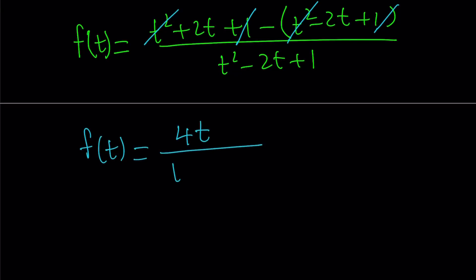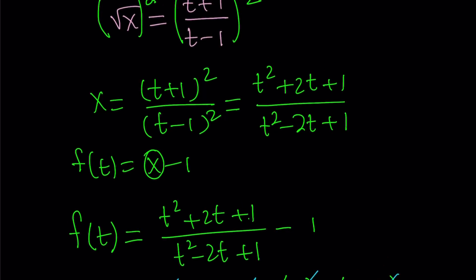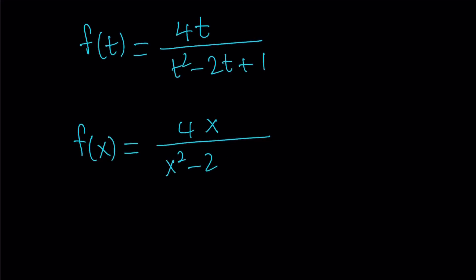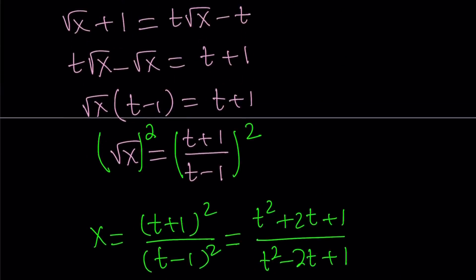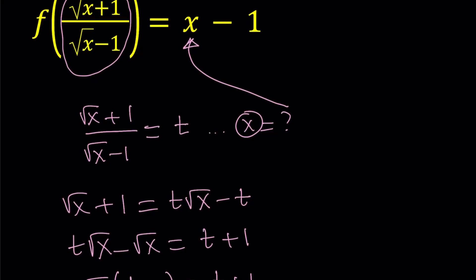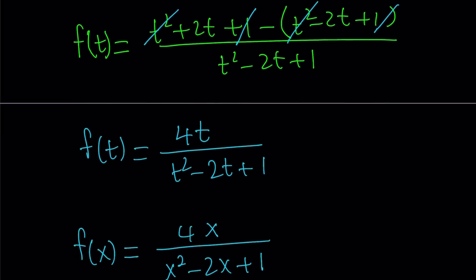Simplifying the numerator — the t squared terms cancel, the constant terms cancel, and we're left with 4t — all divided by t squared minus 2t plus 1. Now our goal was to find f of x, so we just replace t with x. Note it's not the same x we started with — it's just a dummy variable. So f of x equals 4x divided by x squared minus 2x plus 1, which you can write as 4x over x minus 1 quantity squared. Obviously x cannot equal 1 because the denominator would be 0 — and you can verify a similar issue exists in the original problem.